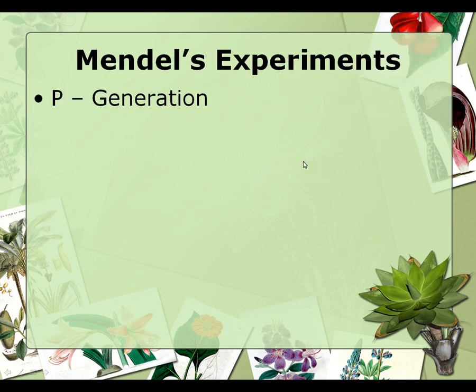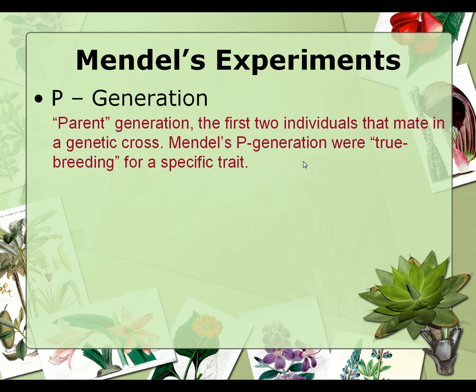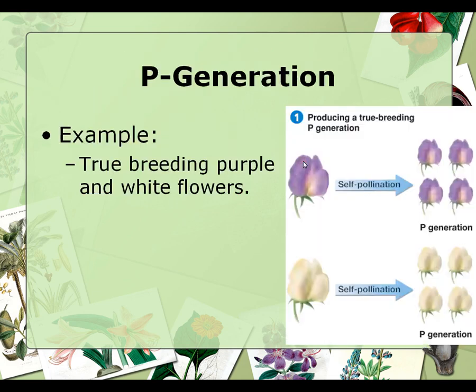To start his experiments, he had to develop the P generation — this is the parent generation. The important thing to know about the P generation is that they were true breeding for a specific trait. True breeding purple flowers always produce purple flowers; true breeding white flowers always produce white flowers.